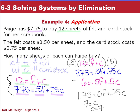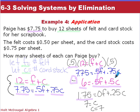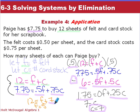Multiplying every term in the first equation by 0.5, we get 0.5f plus 0.5c equals 6. Now our f coefficients are the same, so we subtract the two equations. 7.75 minus 6 is 1.75, the f's are eliminated, and 0.75c minus 0.5c is 0.25c. Divide both sides by 0.25, we get c equals 7 — she's buying 7 sheets of cardstock. Substituting 7 into the first equation, f plus 7 equals 12, subtract 7, f equals 5. She buys 5 sheets of felt and 7 sheets of cardstock.